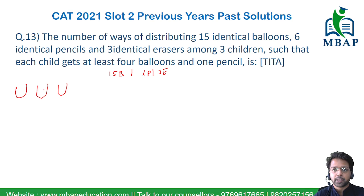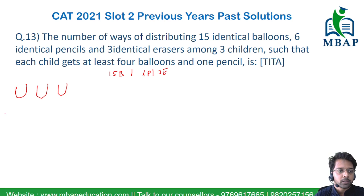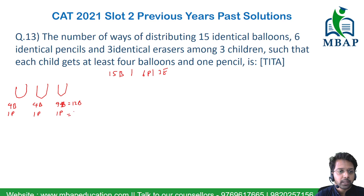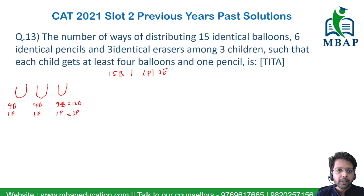The minimum we have to distribute to each child is 4 balloons and 1 pencil. So child 1 gets 4 balloons and 1 pencil, child 2 gets 4 balloons and 1 pencil, and child 3 also gets 4 balloons and 1 pencil. That exhausts a total of 12 balloons and 3 pencils.